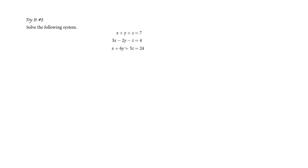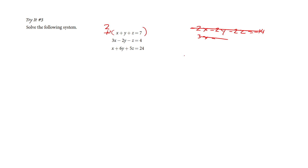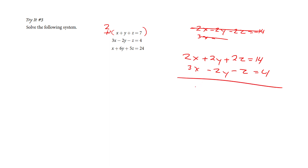Let's do one more. I'm going to run a positive 2 through the top equation so I can set up opposites for the Y's when adding to the middle equation: 2X plus 2Y plus 2Z equals 14. We've got 3X minus 2Y minus Z equals 4. We add those up and get 5X plus 1Z equals 18. We've eliminated Y.